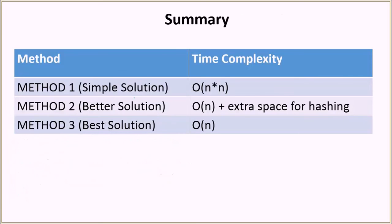Okay, so in summary, we discussed three methods. The first method is a simple solution, but it has the time complexity of order of n squared. Not very good. Then we had a better solution, which had the time complexity of order of n, but it used some extra space for hashing. So we can do better. Actually, the best solution is the one where we are using the XOR operator and that does the job in order of n time complexity and doesn't need any extra space.